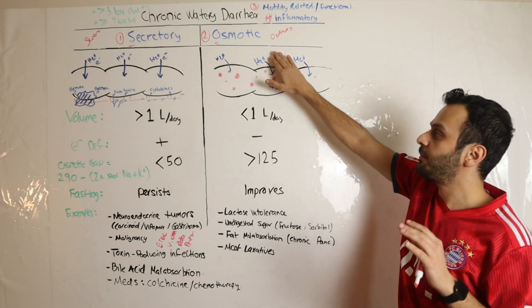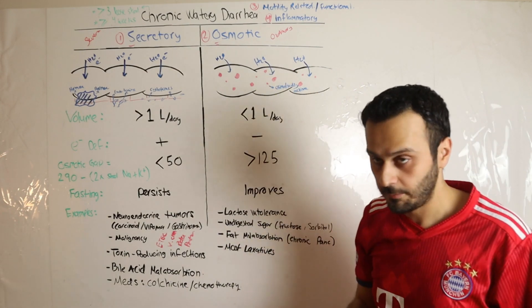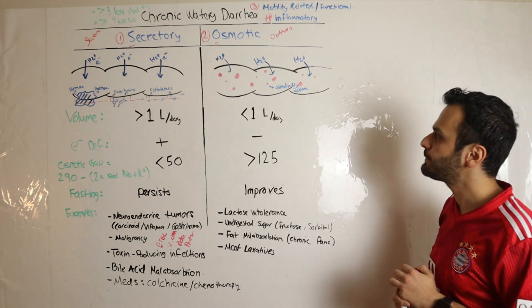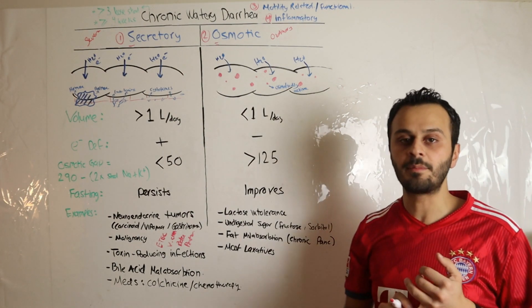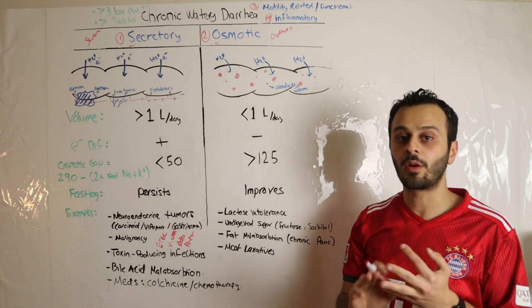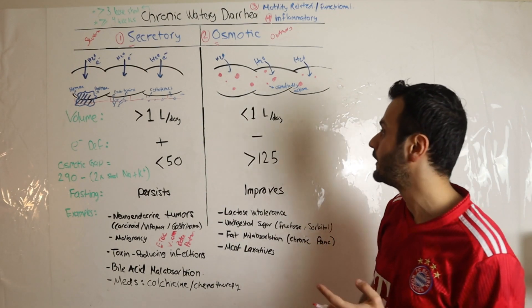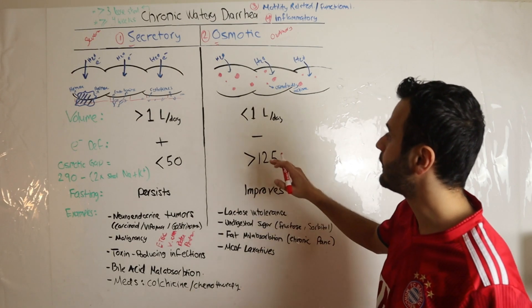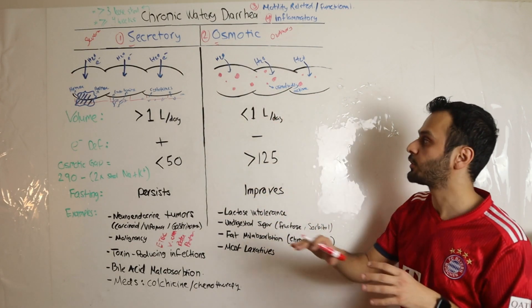In osmotic diarrhea, I like to remember it as an indigestion problem. These patients usually have problems absorbing either sugar or fat or any nutrients that are important in their body. When these nutrients reach the lumen of the GI tract, they will act as osmotically active substances.